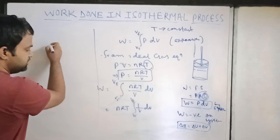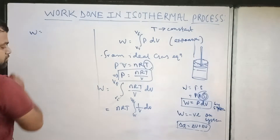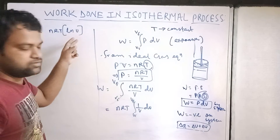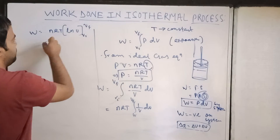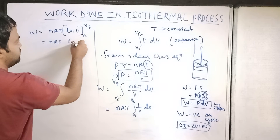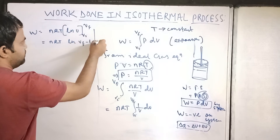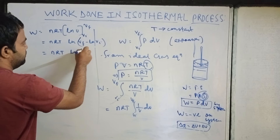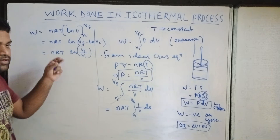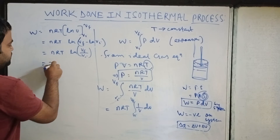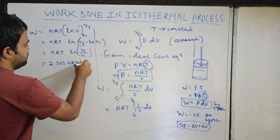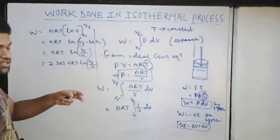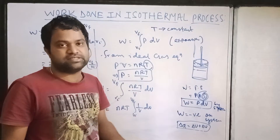The integral of 1/V dV is ln V. So W equals nRT times [ln V] evaluated from VI to VF, which gives W equals nRT ln(VF/VI), since ln A minus ln B equals ln(A/B). To convert to base 10, multiply by the factor 2.303, giving W equals 2.303 nRT log(VF/VI), where VF is the final volume. For the expansion case, we get a positive result; for compression, the final volume is less than the initial, so the result is negative.